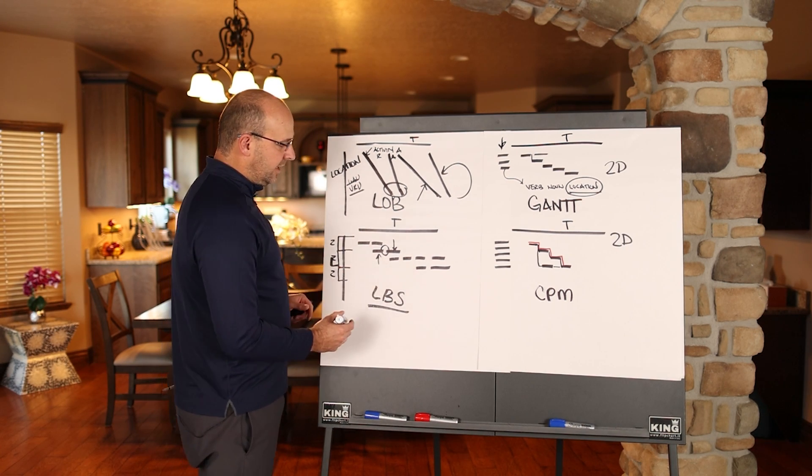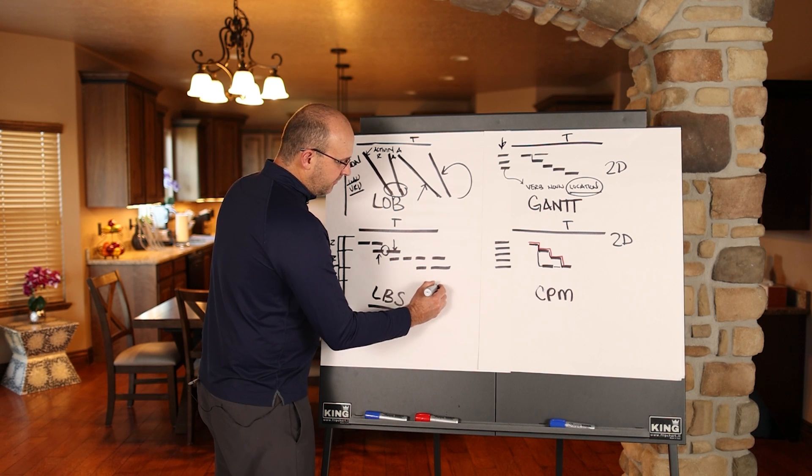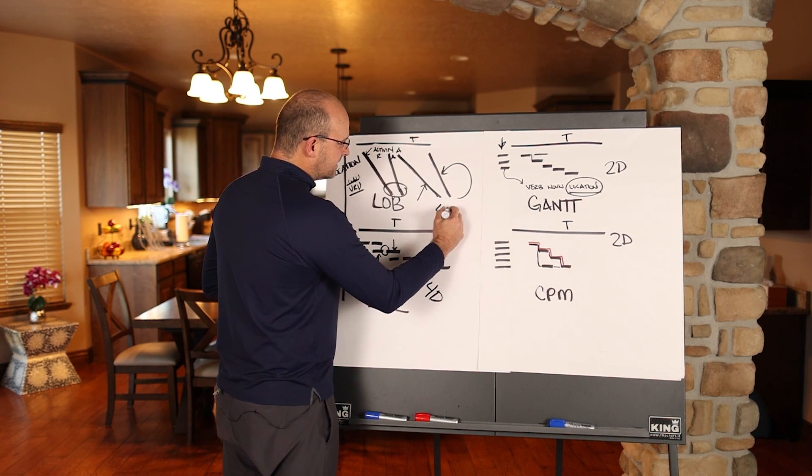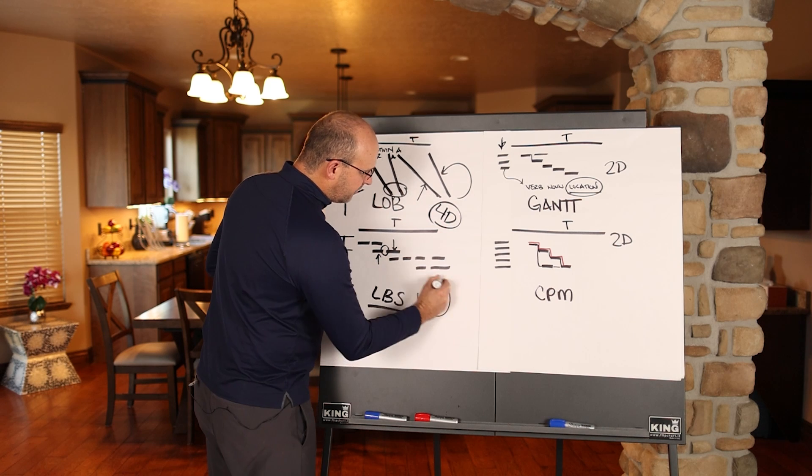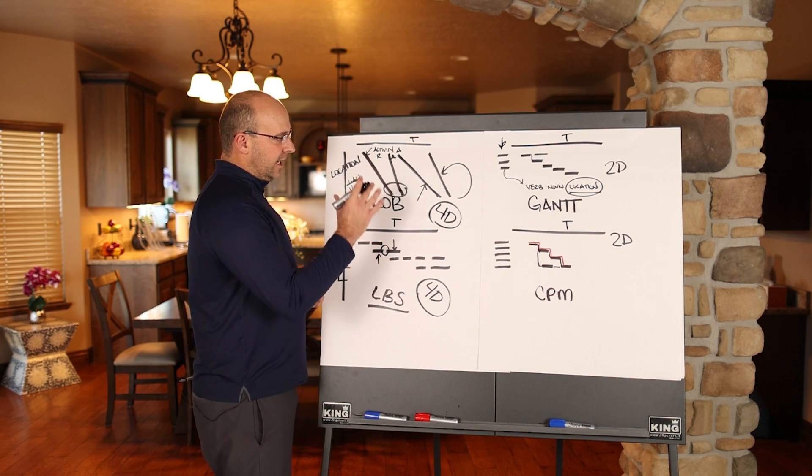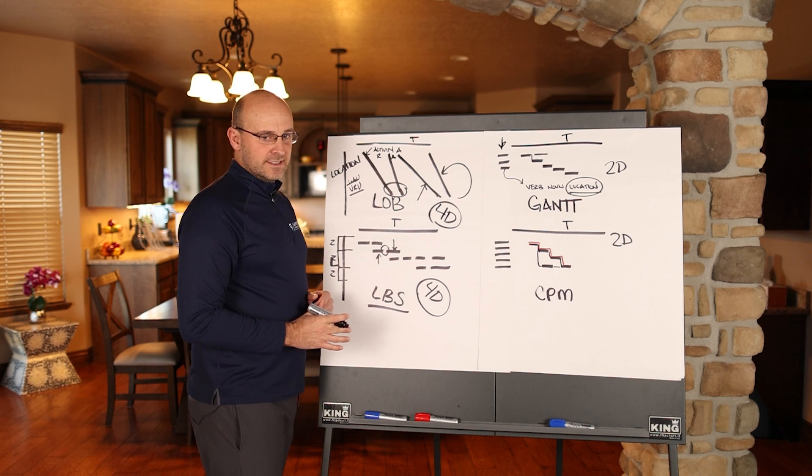And this right here starts to turn this into a 4D schedule. This up here is kind of a 4D schedule, but it's still not formatted right for us to actually get the motion and to see the trade flow that we need to see.